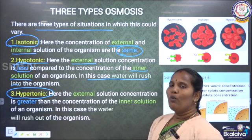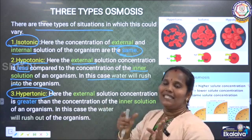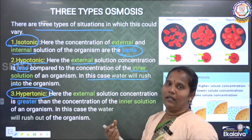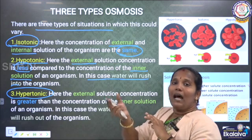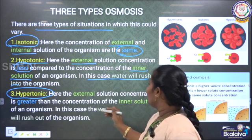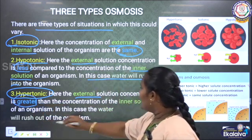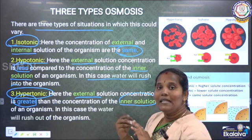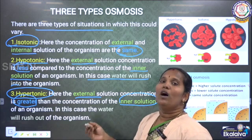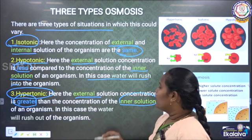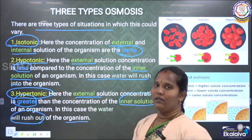The third one is hypertonic. Hypertonic means the water will rush out of the cell, so the cell becomes empty. The water rushes out from the cell, so the external level of water is high. The external solution concentration is greater than the inner solution — because the water rushed out from the cell organism. This is the hypertonic solution.